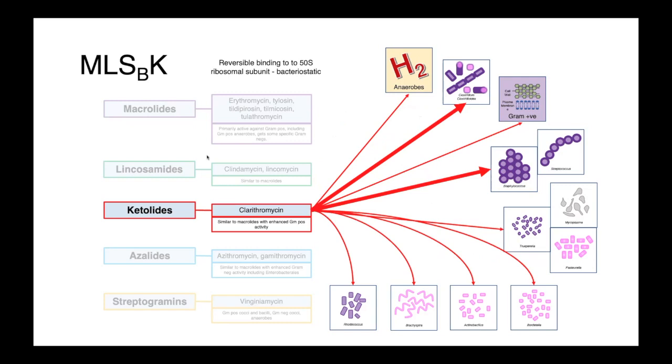The ketolides, drugs like clarithromycin, have greatly enhanced activity against gram-positives but are otherwise fairly similar to the macrolides and lincosamides. They have better action against Clostridium and Clostridioides, and greatly enhanced activity against gram-positive cocci.